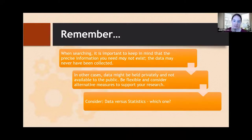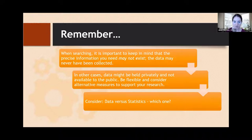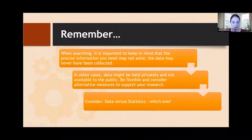Just keep in mind that the precise data set you're looking for may not exist — it may have never been collected. A silly example: you want to know who likes grilled cheese sandwiches versus peanut butter and jelly sandwiches — that data may never have been collected. At the library, we can help you search and offer guidance about whether that data may be available for your specific needs. In other cases, it might be held privately by an organization. Sometimes we recommend contacting that organization, but they might not be willing to release it. So it's good to be flexible and consider alternate measures to support your research. It's also good to keep in mind the difference between a data set and statistics, and which one to use in what situation.